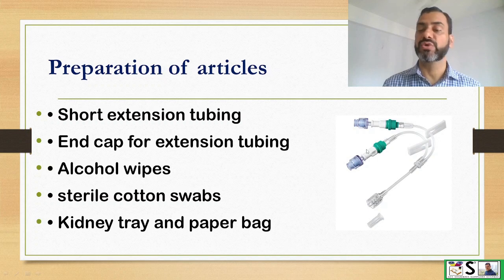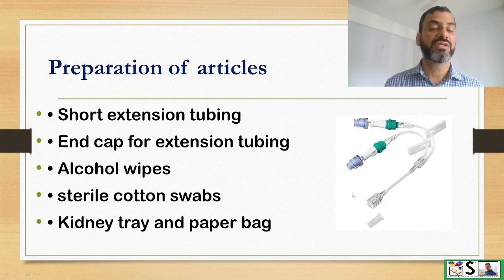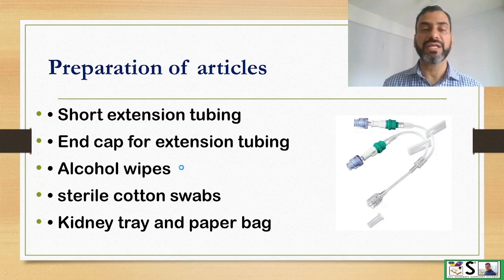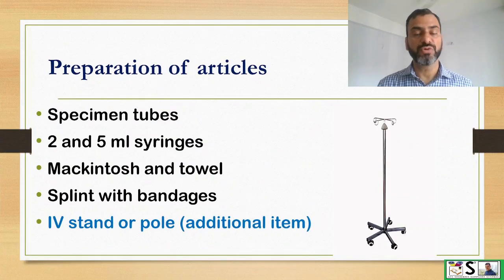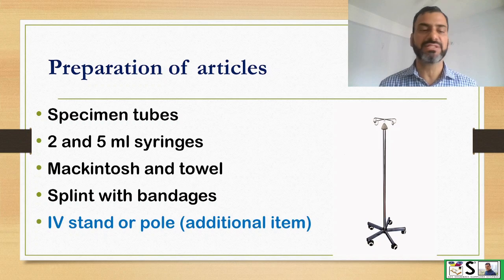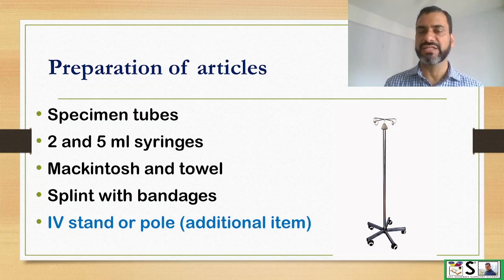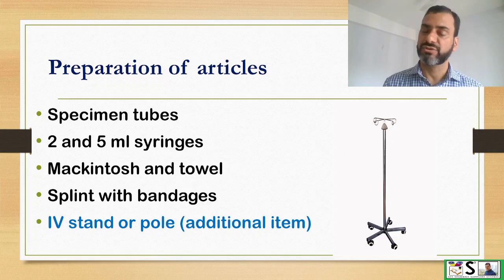End caps, alcohol wipes to prepare the skin, sterile cotton swabs, kidney tray and paper bag, specimen tubes for collecting blood samples if needed, 2 ml and 5 ml syringes, MacIntosh and towel, a splint with bandages to stabilize the hand or body part, and separately an IV stand or pole.